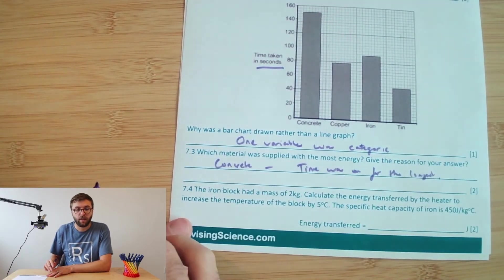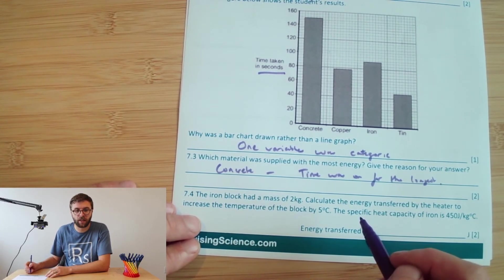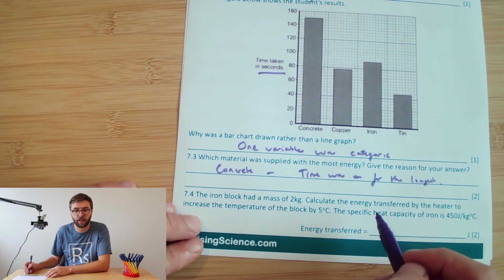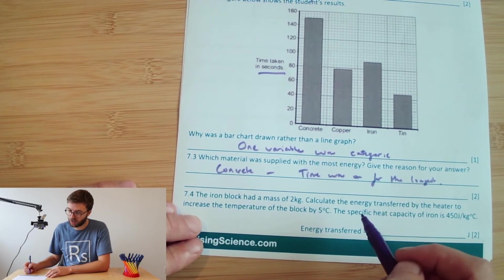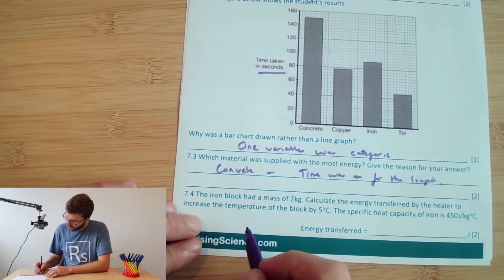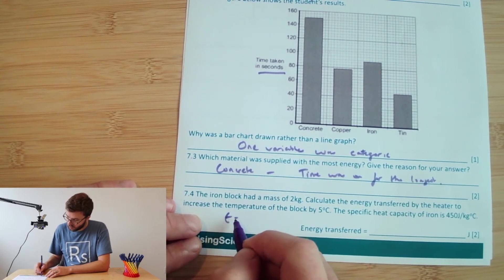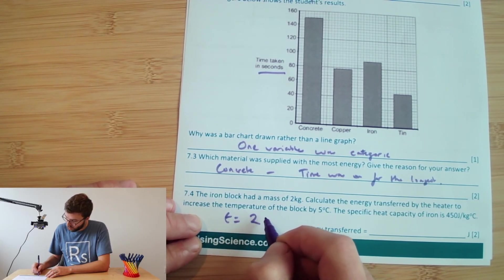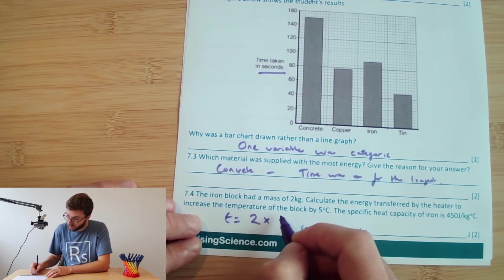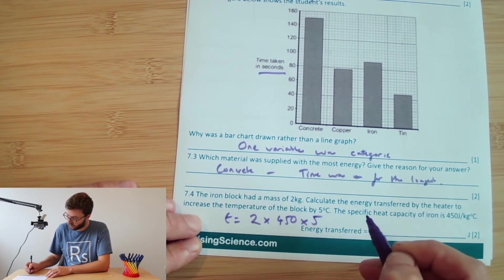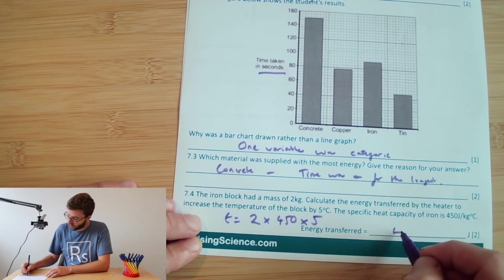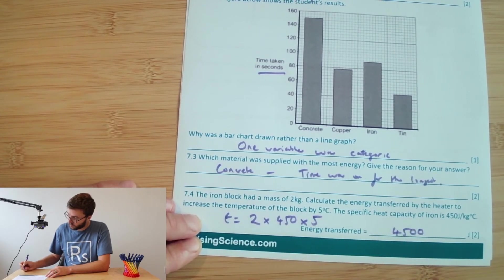Okay, and then finally at the bottom there, seven point, the iron block had a mass of two kilograms. Calculate the energy transferred by the heater to increase the temperature of the block by five degrees Celsius. The specific heat capacity of iron is 450 joules per kilogram degree Celsius. So for this one, the energy transferred is going to be the mass, which is two, multiplied by the specific heat capacity, which is 450, multiplied by the temperature change, which is five. So if we work those out, we're going to get 4,500 joules.